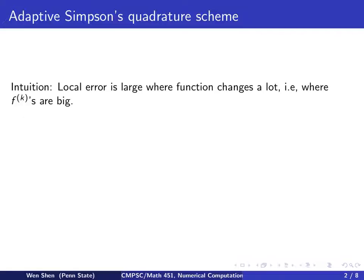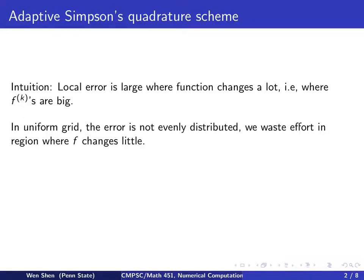From the error analysis we have done, especially the error on each subinterval — the local error — we have the observation that the local error is large when the function changes a lot, that is, where the derivatives of the function f are big. So when we use a uniform grid, we distribute the grid in a uniform way, but since the derivative of f is not uniform, the error is not evenly distributed. Therefore, we waste effort in the region where f changes very little.